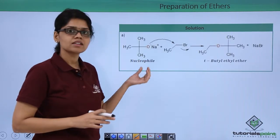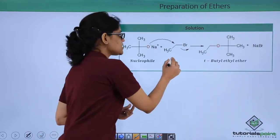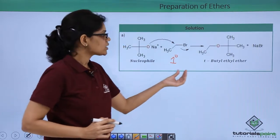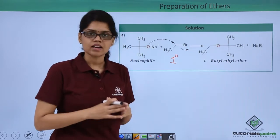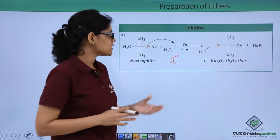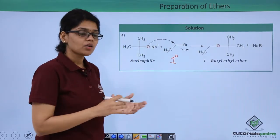We can see that the nucleophile here, tert-butoxide ion, will attack the primary alkyl halide CH3-CH2-Br to give us tert-butyl ethyl ether, which is our desired product. So here we have used the primary alkyl halide and the tertiary alkoxide ion.